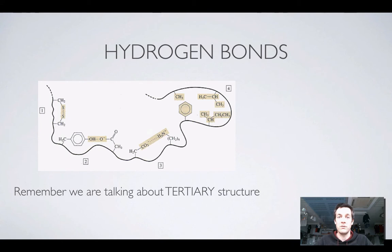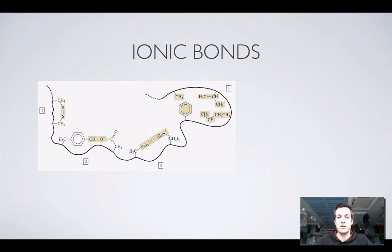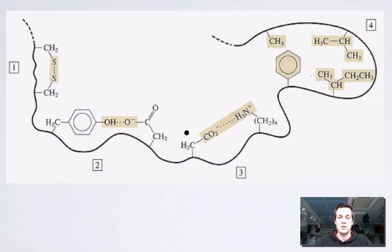What other kind of interactions could you have between side chains? Well, you could have ionic bonds. If you happen to have a side chain that maybe had a negative charge like this one and another side chain that happened to have a positive charge like this one—and we've seen how these things can occur in amino acids when we looked at zwitterions.